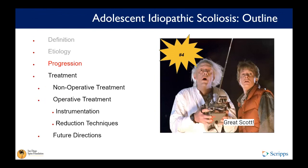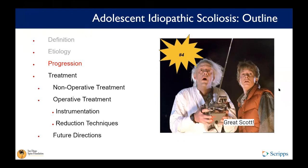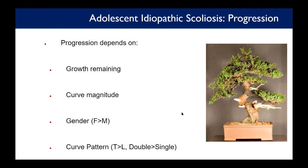Number four on the movie list is Back to the Future, released July 1985 — Michael J. Fox crushes it, a timeless classic. Progression of AIS depends on growth remaining, curve magnitude, gender (female greater than male), and curve pattern: thoracic greater than lumbar, and double curve greater than single curve.